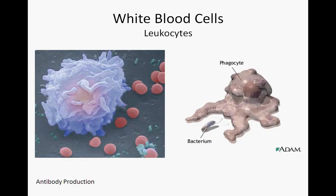White blood cells, or leukocytes, are another essential component of our blood. While they are far less abundant than red blood cells, white blood cells fill a critical role in the fight against infectious disease. Therefore, although they are produced in the red bone marrow, many white blood cells spend much of their life in the lymph nodes, or at infection sites outside the blood vessels.